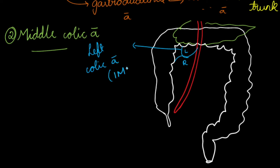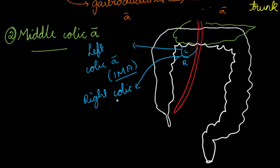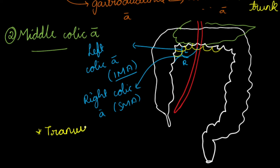The right branch of the middle colic artery anastomoses with the right colic artery, which is a branch of the superior mesenteric artery. These branches form arcades and supply the transverse colon mainly through these arcades.